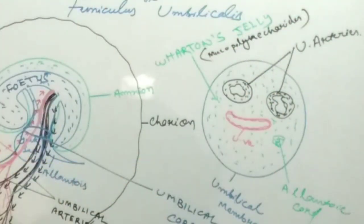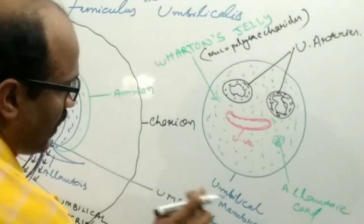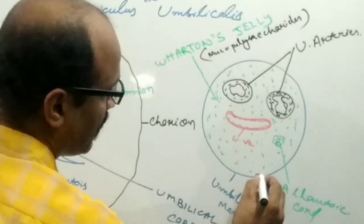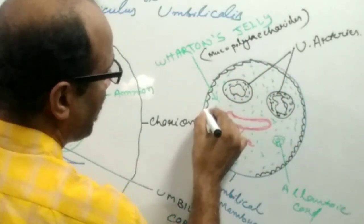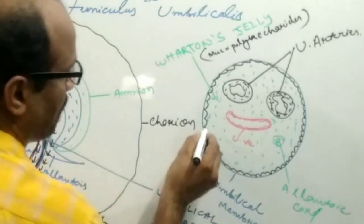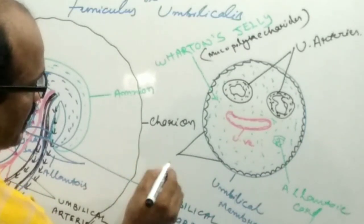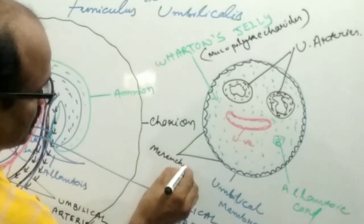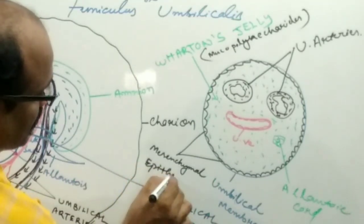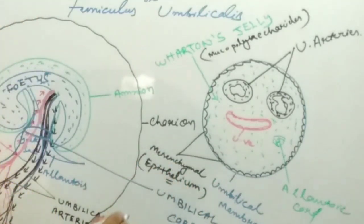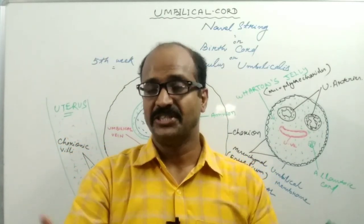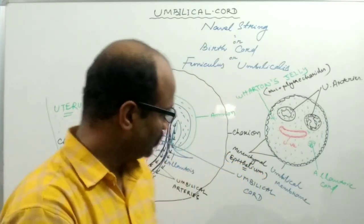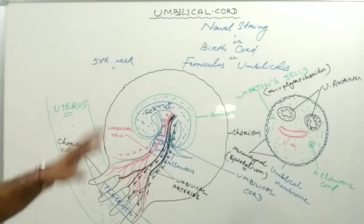The internal lining of the umbilical membrane is the mesenchymal epithelium. This mesenchymal epithelium behaves as a stem cell — mesenchymal or epithelial stem cells. Nowadays they are required for research and for transplantation purposes.